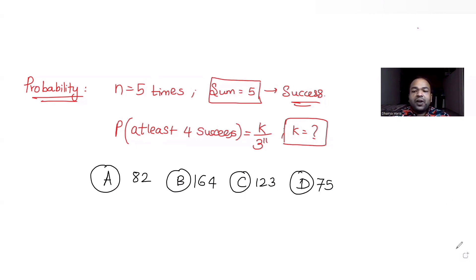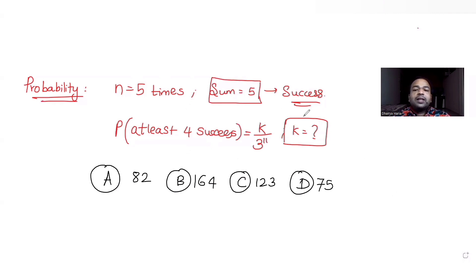Let's solve that. We have been given that probability is asked for at least four successes, and success means getting a sum of five when you throw a pair of dice.